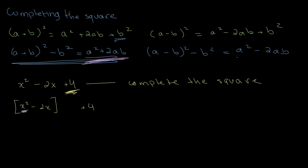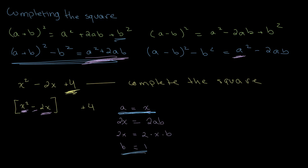How do we do that? We can see that x² looks like A², therefore A = x. For the term -2AB: 2AB = 2x, and since A = x, we get 2x·B = 2x, which gives us B = 1. So our value for A is x and B is 1. We have an expression like A² - 2AB and we want to make it look like (A - B)² - B².